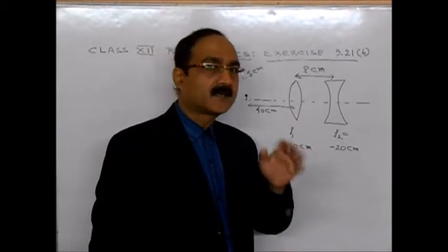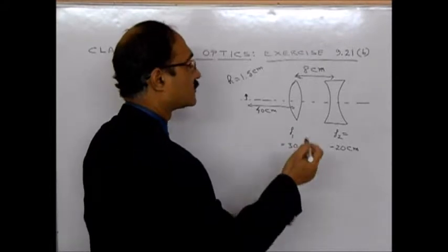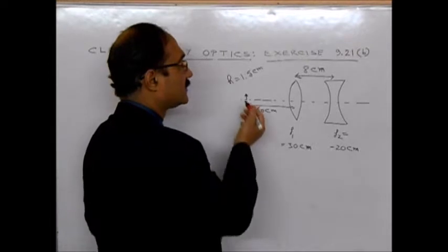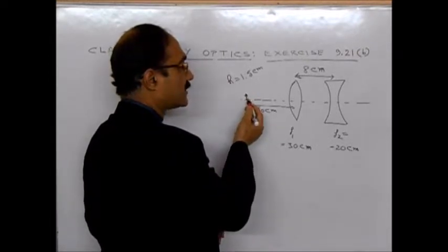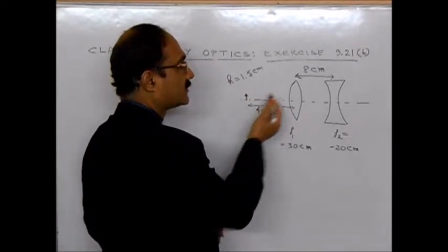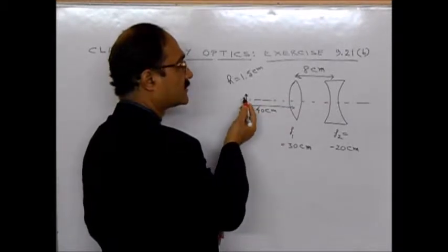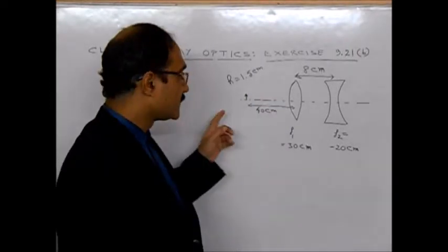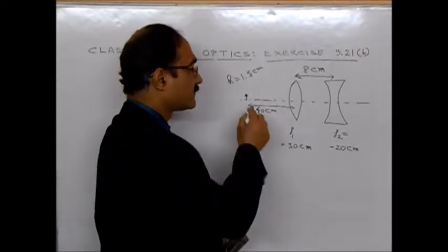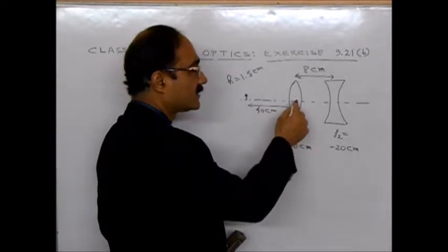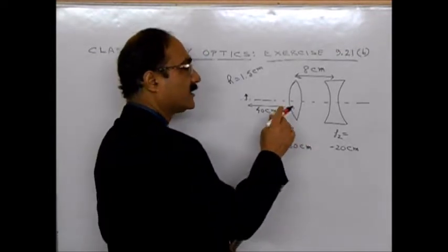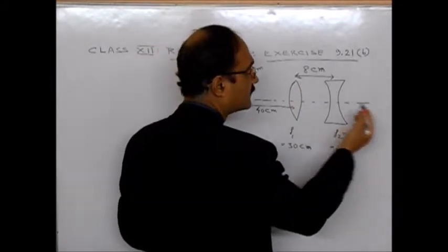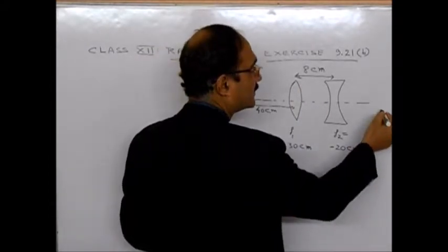Then, how do we proceed to solve a problem like this? The technique is this. First, what you have to do is, you observe that it's given in the equation. The object is at a distance of 40 cm from this convex lens and the size of the object is given to be 1.5 cm.